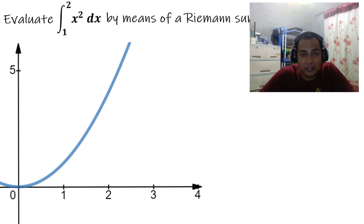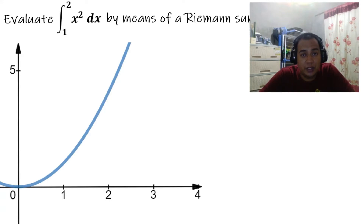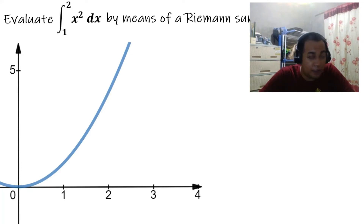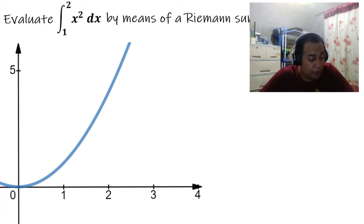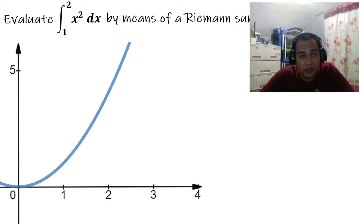Let us have an example on evaluating a definite integral using Riemann sum. We are going to solve a problem from the book: evaluate the integral of x squared dx from 1 to 2 by means of Riemann sum.